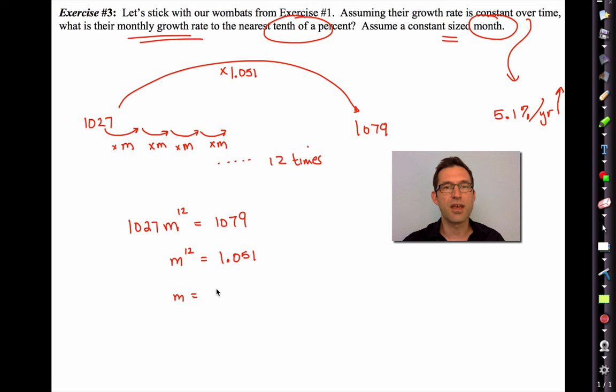And what we know is that M to the 12th is has to give us 1.051. Whatever M to the 12th is has to give us what we multiplied by after a year. But that means we take the 12th root of 1.051 to shrink us back to the month time scale. So you can either think of it as the 12th root or the 1/12th power. So we're not going to divide the 5.1% by 12. We're going to raise 1.051 to the 1/12th.